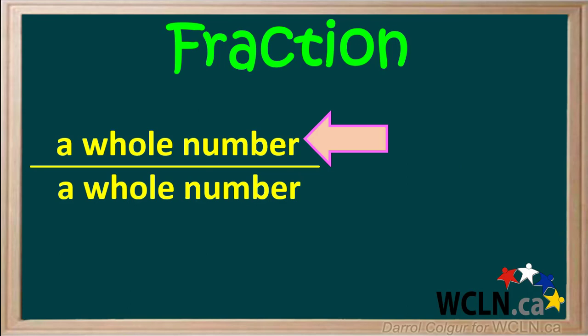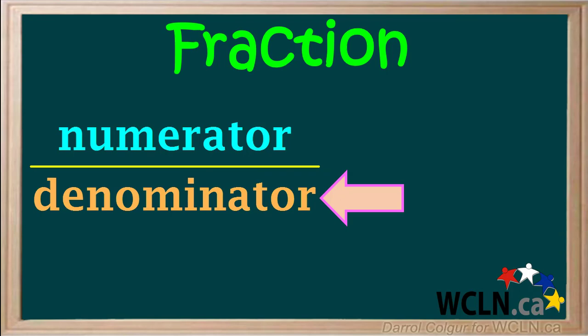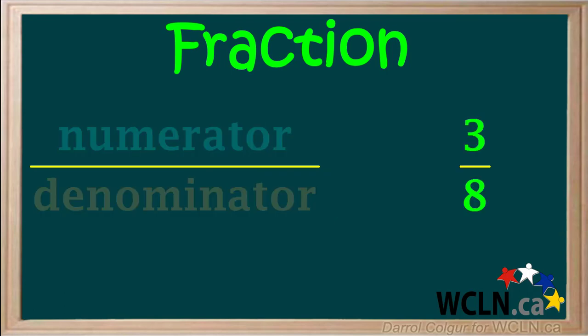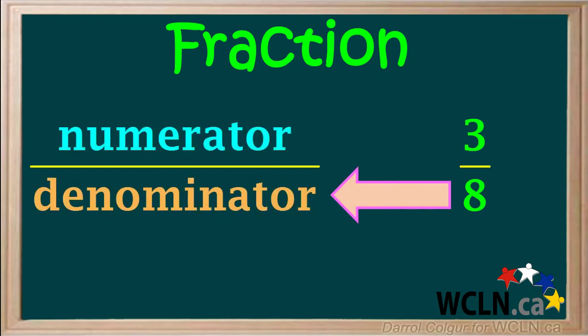The number on top of the line is called the numerator, and the number below the line is called the denominator. For example, for the fraction three over eight, three is the numerator, and eight is the denominator.